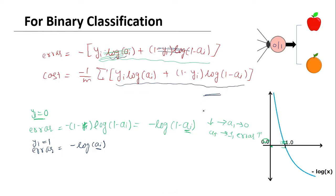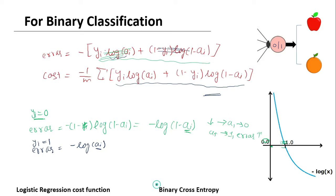This will be the formula for the cost function for binary classification. If you know about logistic regression, you will know that this is the formula used for logistic regression, and the same formula is used for binary classification in neural networks. So this can also be called the logistic regression cost function. The other name for this cost function is binary cross entropy, which you will come across a lot while dealing with neural networks.